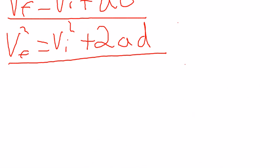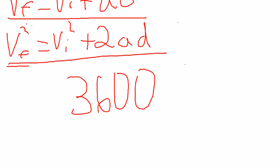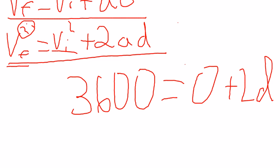So we're just going to plug in the numbers again. 36,000 because it's going to be Vf squared. 36,000 equals 0 plus 2D because acceleration is 1 so it's just going to be 2 times 1 times D.